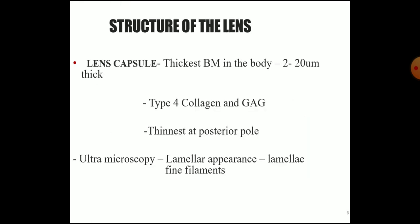The lens capsule is the thickest basement membrane in the body, with a thickness of 2 to 20 micrometers. It consists of type 4 collagen and glycosaminoglycans, and is thinnest at the posterior pole. Ultra-microscopy shows a lamellar appearance of fine filaments.